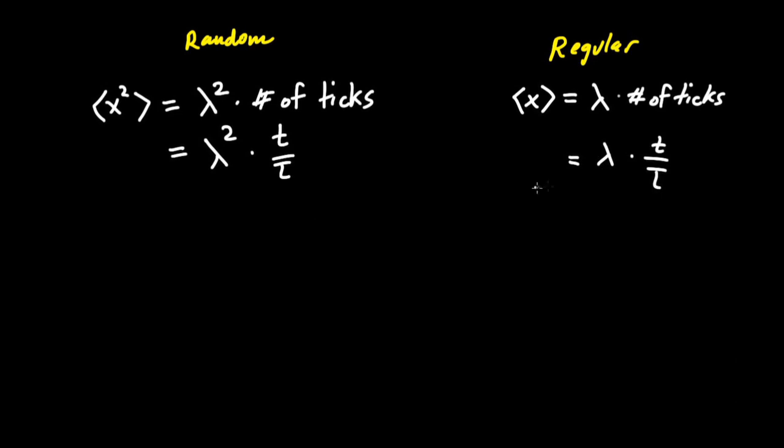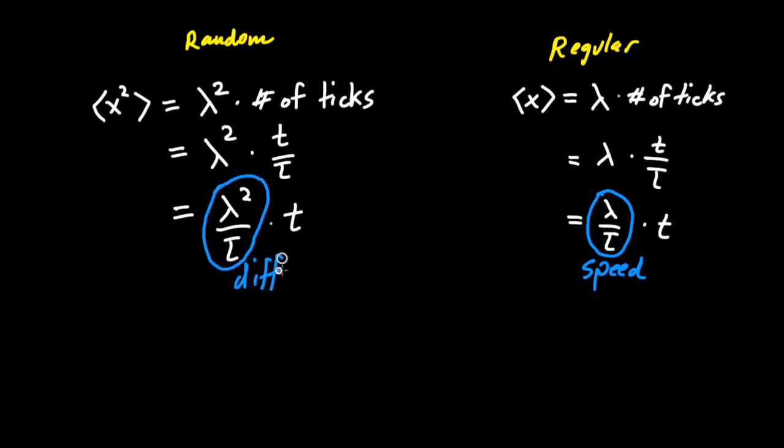In the regular walk, we can rewrite that as lambda over tau times t. That lambda over tau here has a special name, the speed. In a random walk, the constant of proportionality is lambda squared over tau. This constant, lambda squared over tau, which has dimensions of length squared per time, is the diffusion constant, d.